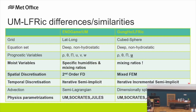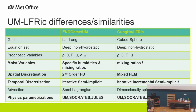A brief comparison: Endgame/UM vs Gung Ho/LFRic. The grid changes from lat-long to cubed sphere. The equation set is essentially the same. Prognostic variables are the same, except winds are now combined into a full 3D vector rather than separate zonal and meridional components. LFRic will only use mixing ratios, not specific humidities. Physics parameterizations - Socrates, Jules, UKCA - are retained with the same interfaces as the UM.